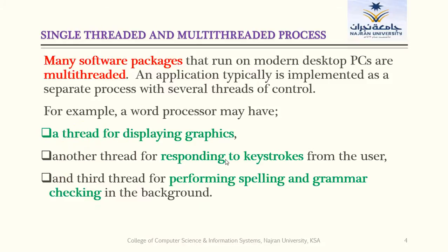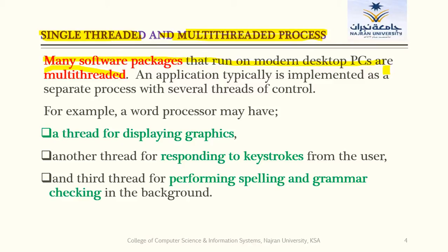We have two types: single-threaded and multi-threaded processes. As the name shows, a single-threaded process is divided into only one thread, and a multi-threaded process may have more than one thread. Currently, many software packages running on modern desktop systems are multi-threaded. The applications we are using today are multi-threaded. There are some benefits of the multi-threaded model which we will discuss one by one.